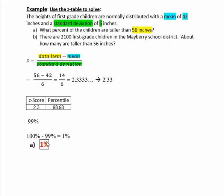So we need to find 1% of 2,100 children. We find a percentage of a number by multiplying that percent in its decimal form. We'll need to move the decimal point two places to the left to write 1% as 0.01 times 2,100.